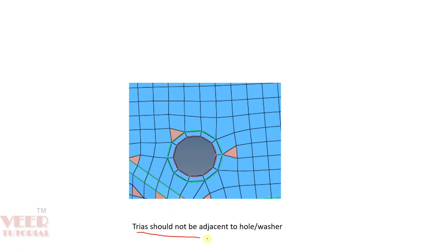Trias should not be adjacent to a hole and washer. Here we can see we have a washer with respect to the hole, so we have to avoid trias near the hole. However, sometimes it may happen that we need to put trias adjacent to the washer in some exceptional cases.